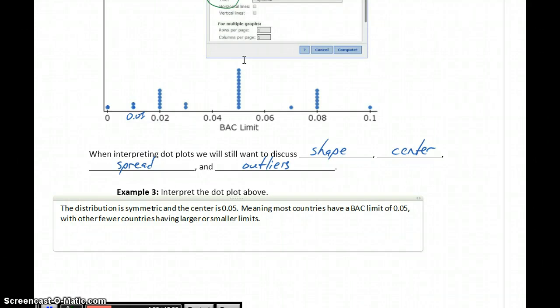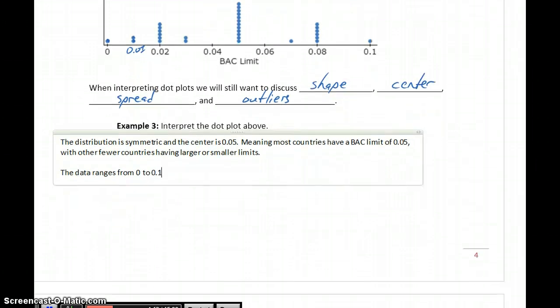We can also discuss the spread. In this case, the data ranges from 0 to 0.1, and the question is, is that a big range or is that a small range? The difference between 0 and 0.1, just as numbers, is pretty small. But in this case, what we're talking about is blood alcohol concentration, how intoxicated a person has to be before that starts to affect their ability to operate.